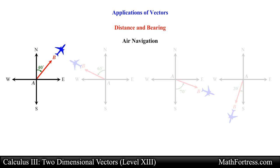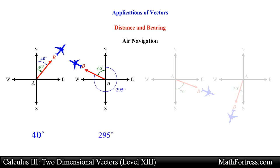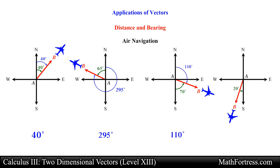The first vector would have a bearing of 40 degrees. The second vector would have a bearing of 295 degrees. The third vector would have a bearing of 110 degrees. And the last vector would have a bearing of 200 degrees.